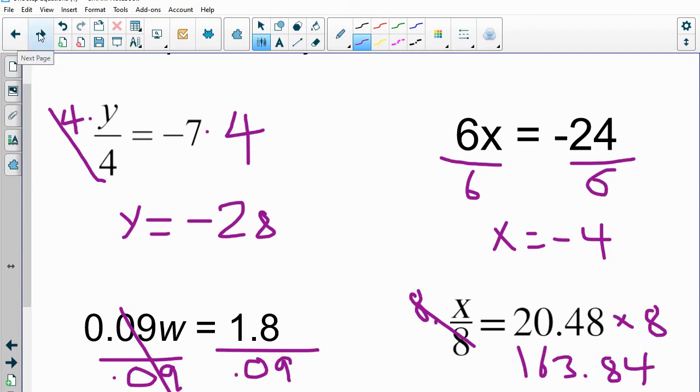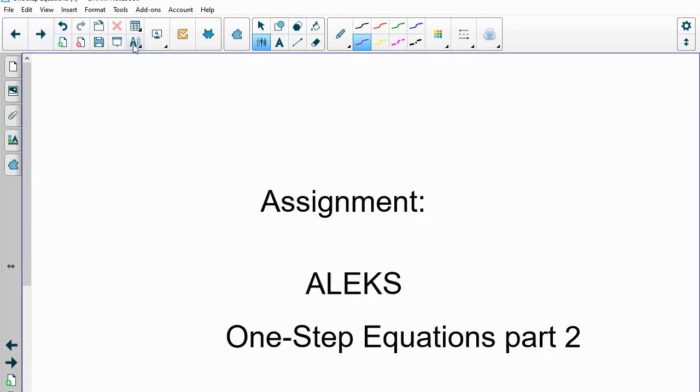And we're not going to do any additional rounding on this one. If we want you to do some additional rounding on certain problems, we'll let you know. All right, so there we go. Your next assignment, one step equations part two, dealing with multiplication and division properties. Thank you very much.